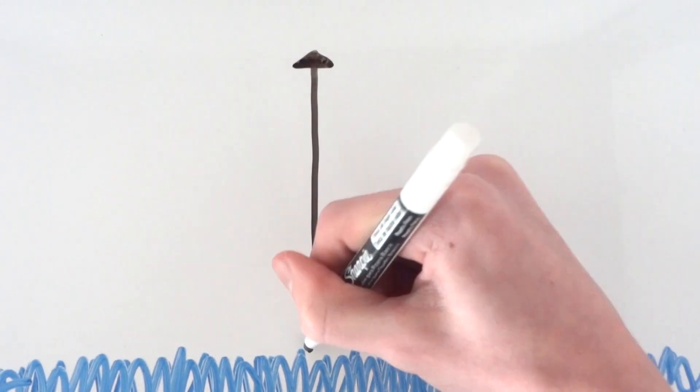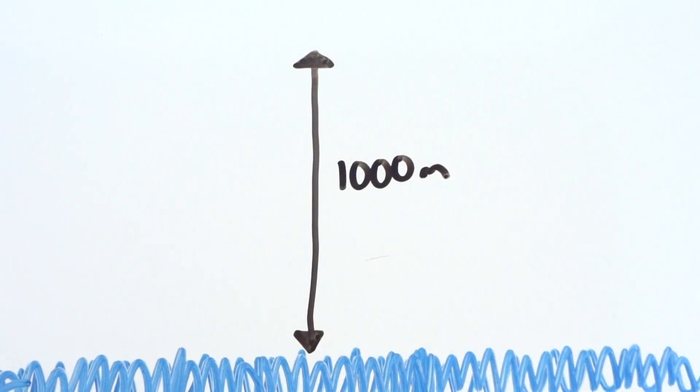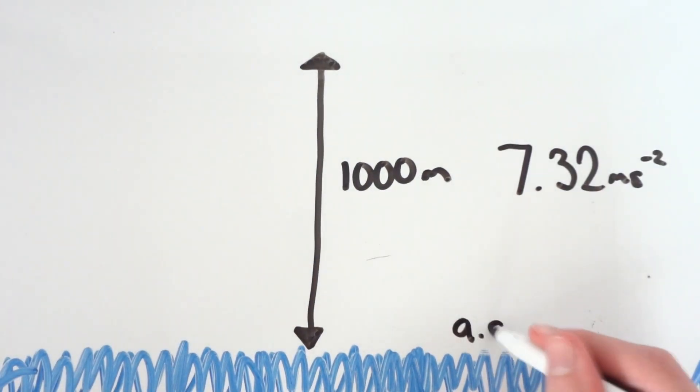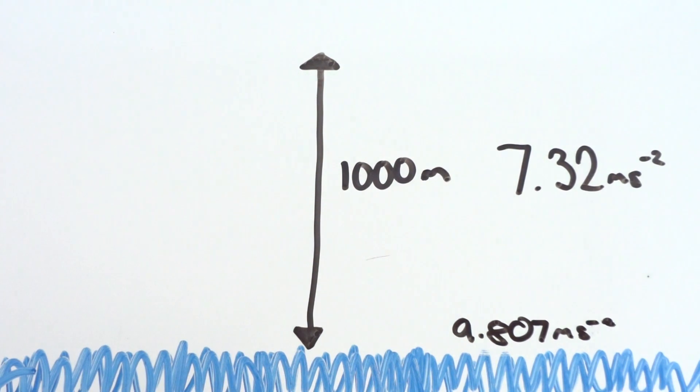For example, at 1000 kilometers above sea level, when you drop something, it will accelerate down towards Earth at 7.32 meters per second squared compared to 9.807 at sea level.